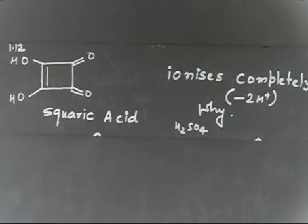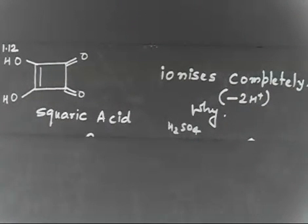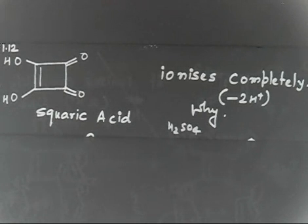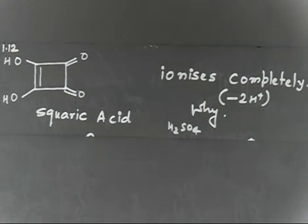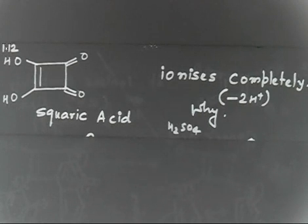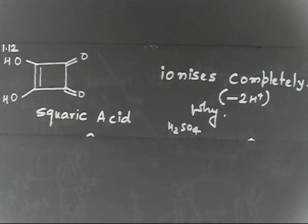Make a negative charge here, make a negative charge here, and let us write the 5 resonating structures. Let me see how many of you are able to write — I will give you one and a half minutes. Now, flow the arrow, and then you will get the 5 resonating structures.